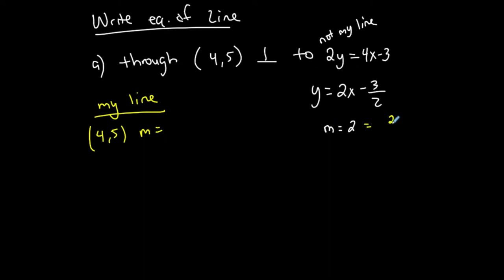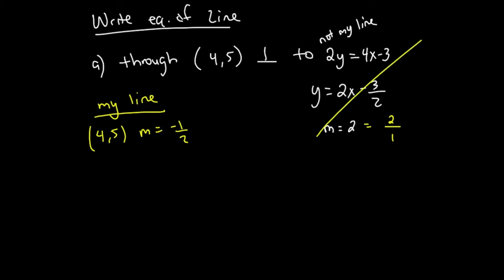Since 2 is the same as 2 over 1, and my line is perpendicular, the slope of my line is the opposite reciprocal: the reciprocal of 2 is 1/2, and the opposite makes it negative 1/2. Once I get the slope of my line from the given equation, I no longer need that equation. If it were parallel, the slope would be the same.